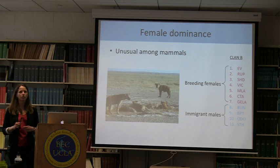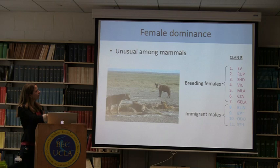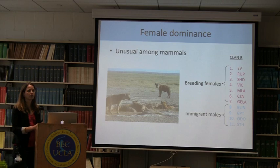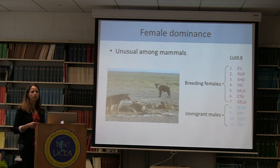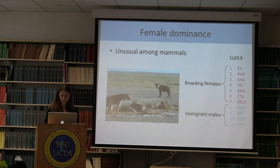What this creates is a rather unusual social organization among adult animals within a clan. The breeding females within a clan are higher ranking than the breeding males — the immigrant adult males. Consequently, hyenas have this rather unusual social organization among mammals in which females are dominant to males in adulthood.